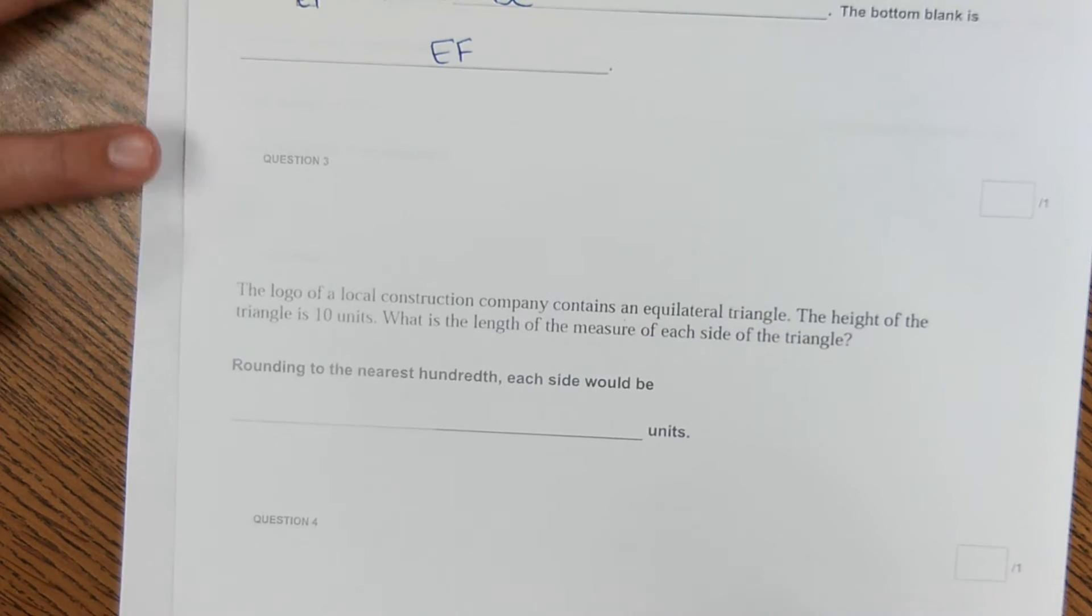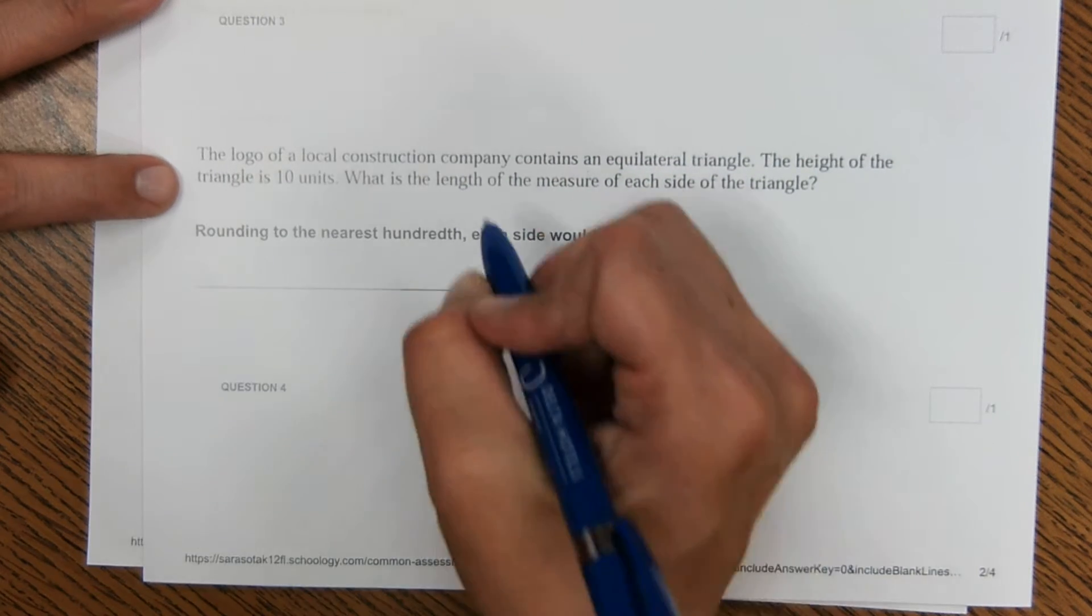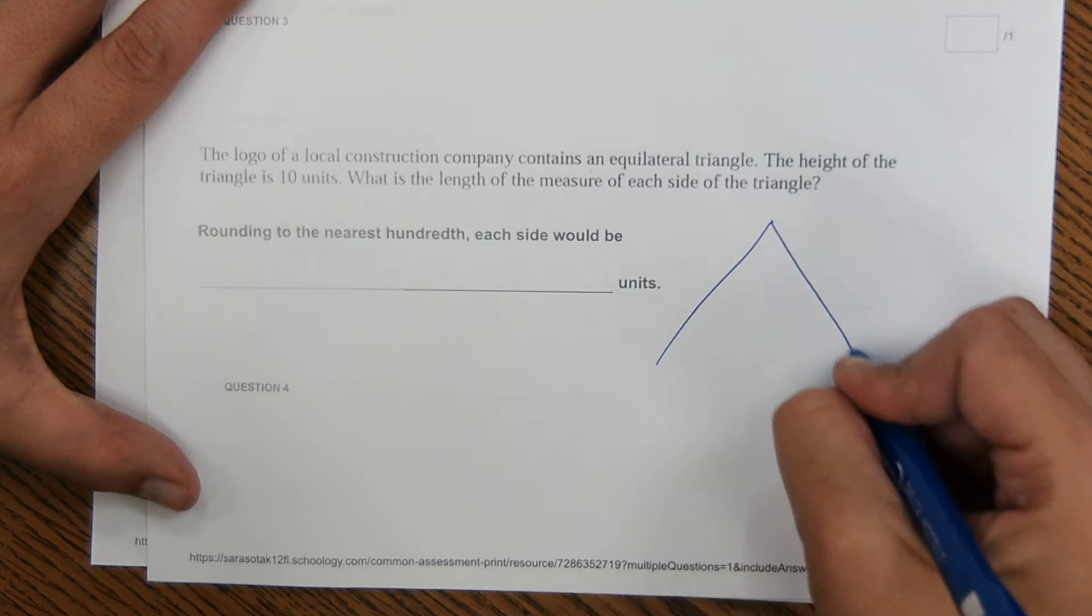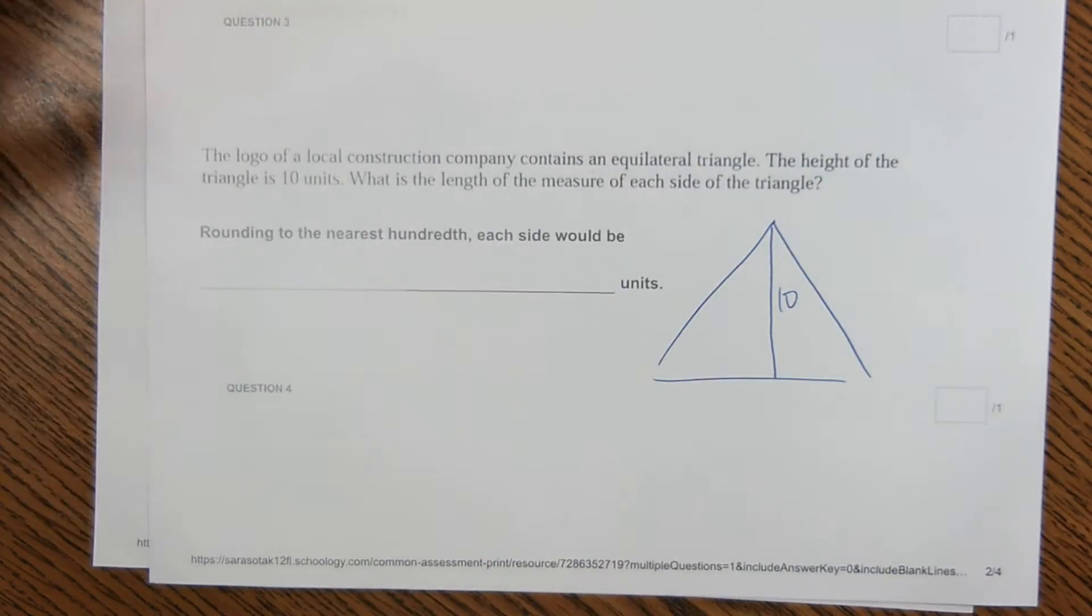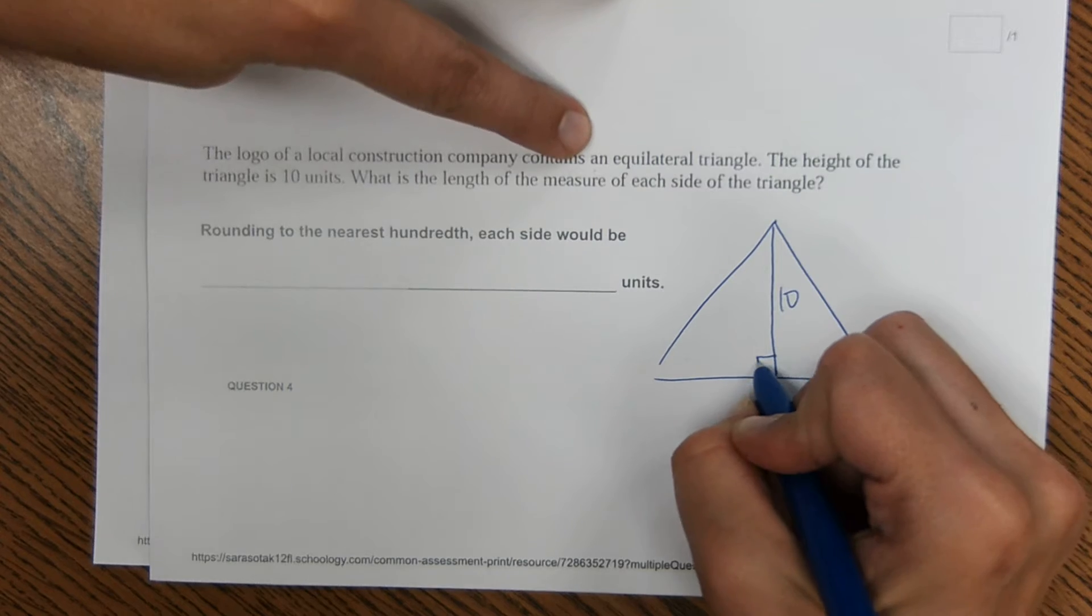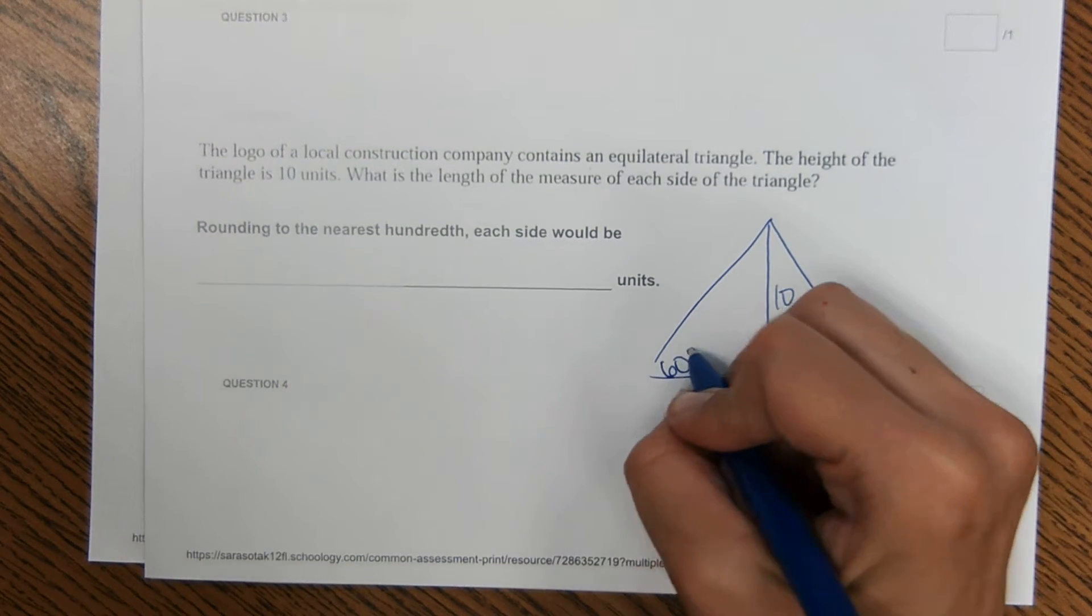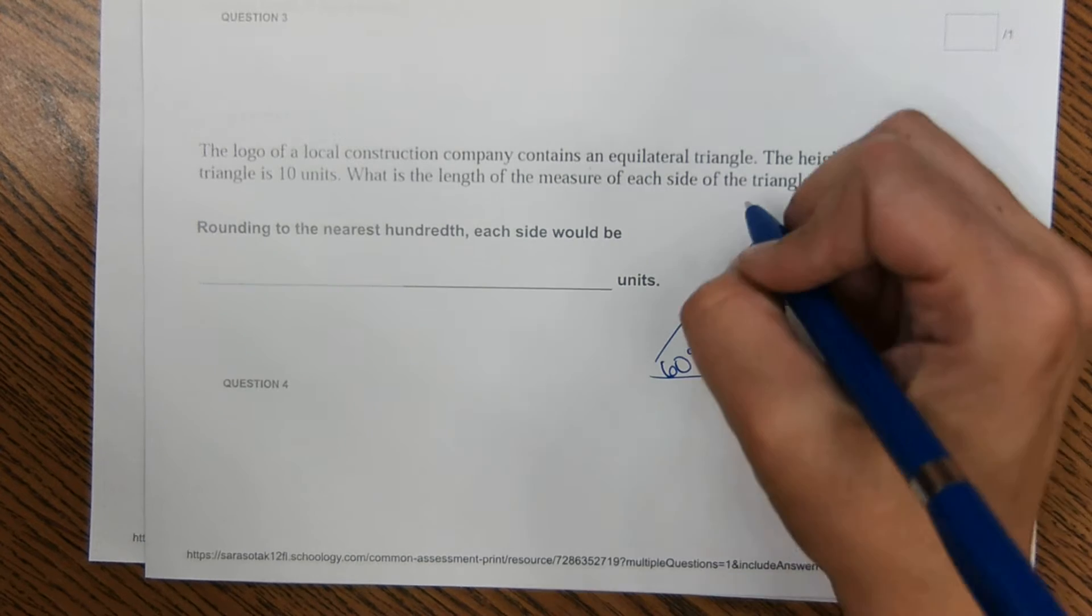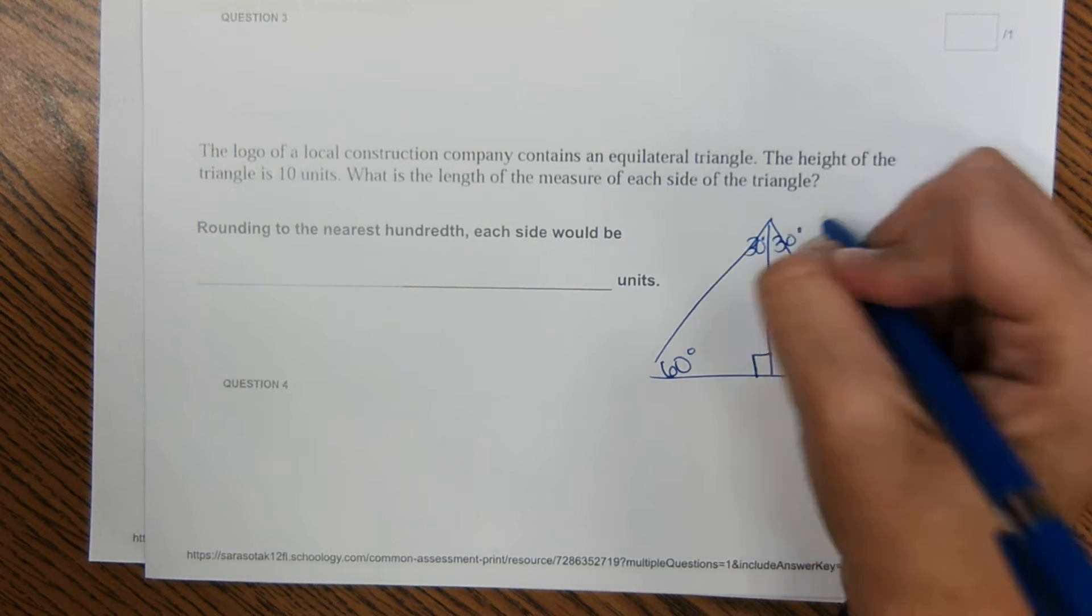Okay, moving on. The logo of a local construction company contains an equilateral triangle. The height of the triangle is 10 units. What is the length of the measure of each side of the triangle? Okay, well, the height would make a 90 degree angle, so now we have right triangles. It's equilateral, so we have a 60 degree angle here, 60 here, and then this 60 degree angle would be split evenly.